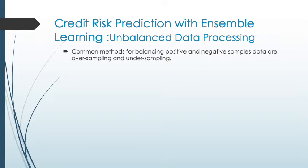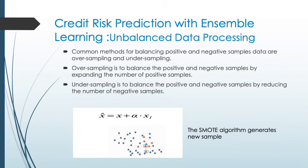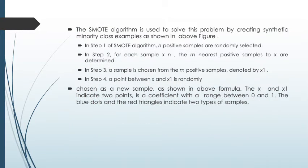Over-sampling may lead to overfitting and under-sampling may waste lots of effective samples. Under-sampling balances the positive and negative samples by reducing the number of negative samples. As seen in the graph, the SMOTE algorithm is used to generate new samples. In the next slide, this paper uses the SMOTE algorithm to solve the problem by creating synthetic minority class examples.